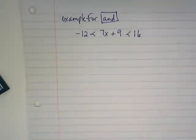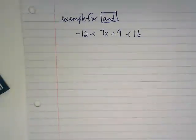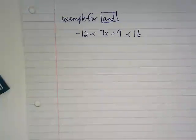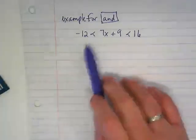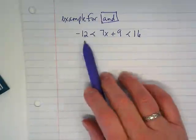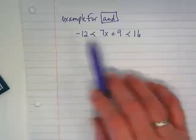The thing about an 'and' inequality when you're solving it, it's already written as that long statement where all of the pieces are together and both inequalities are in the math sentence. When I look at this I've got three places: I have negative 12, 7x plus 9, and 16.